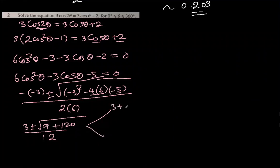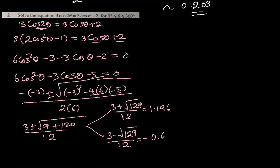Minus minus 3 plus minus square root b² minus 4ac over 2a. So we get 3 plus minus square root 9 plus 120 over 12. So we have two solutions. One is 3 plus square root 129 over 12. Second will be 3 minus square root 129 over 12. If I solve this one, I get 1.196 approximately, and this one is negative 0.6964.